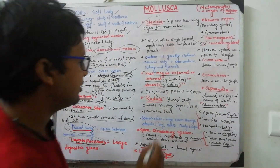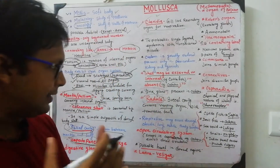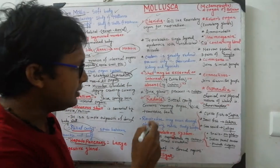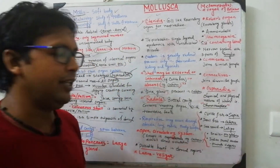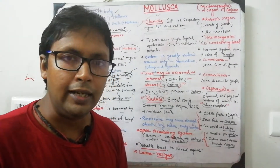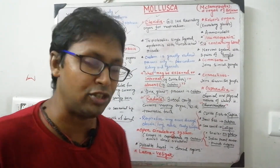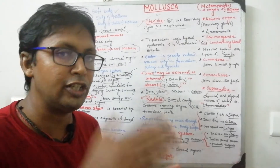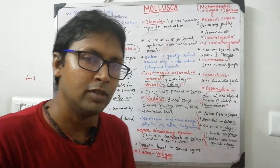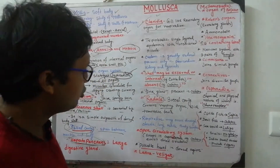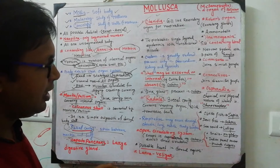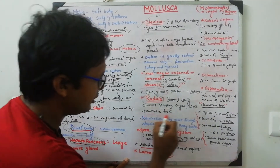Another important structure is the radula. Molluscs have a buccal cavity containing a rasping organ called the radula. The radula has transverse teeth-like structures that help scrape and take in food, including solid food. It is present inside the buccal cavity and is a key diagnostic feature.